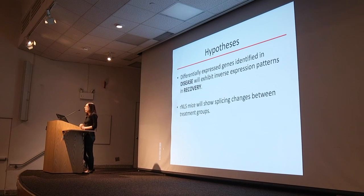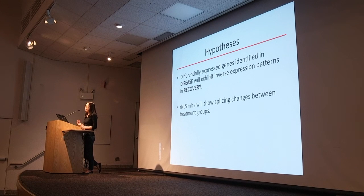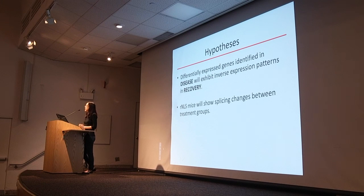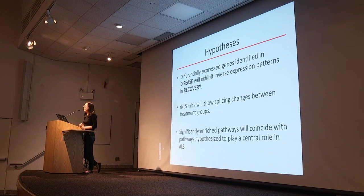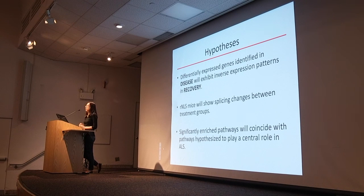Because TDP43 has been implicated in the regulation of splicing activity, I also hypothesize that these mice will show splicing changes between groups. A significant amount of splicing changes would suggest that the overall effect of transgene overexpression is likely due to a loss of normal nuclear function, because splicing occurs in the nucleus. Lastly, I hypothesize that any significantly enriched pathways corresponding to the differentially expressed genes will coincide with pathways hypothesized to play a central role in ALS, such as RNA regulation and proteostasis.